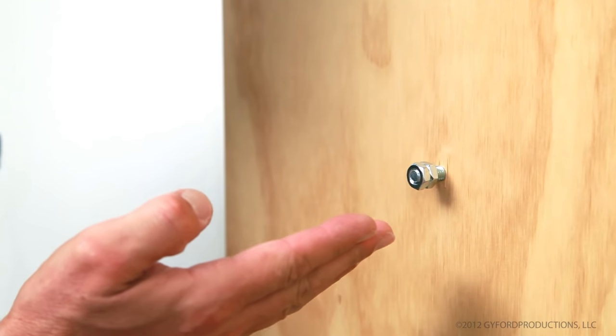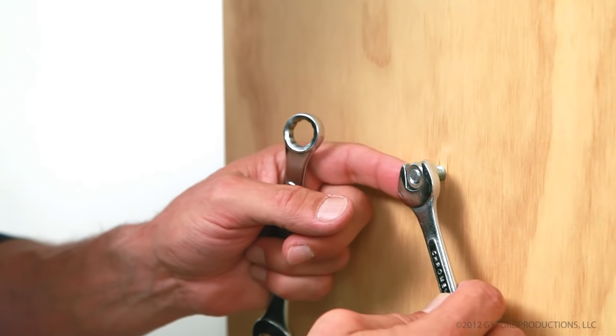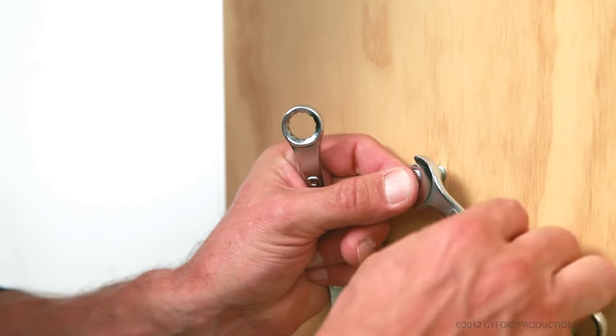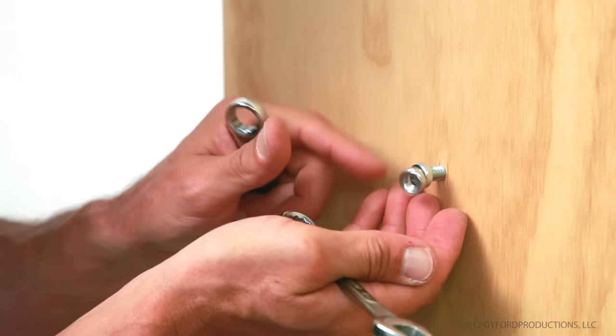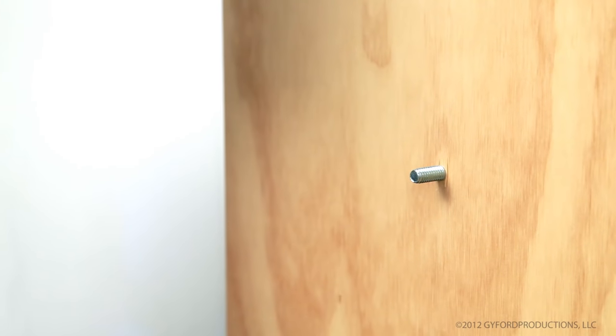Now you can remove these by just backing off the outermost nut. That'll loosen everything up. Spin them off and move on to your next one.